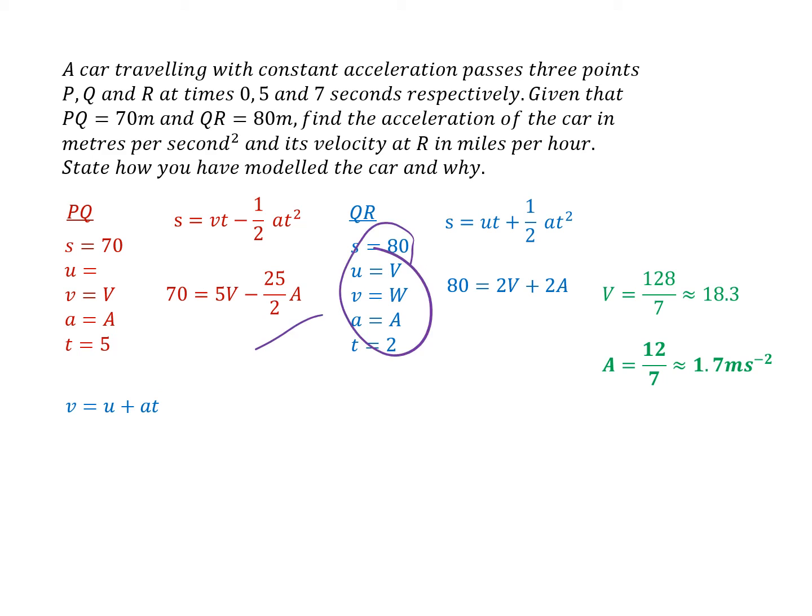Putting this information into that formula now gives me a figure for W. So W is 152 over 7 meters per second. But hang on a minute, we've got to find that velocity in miles per hour, so a little bit more work to do.